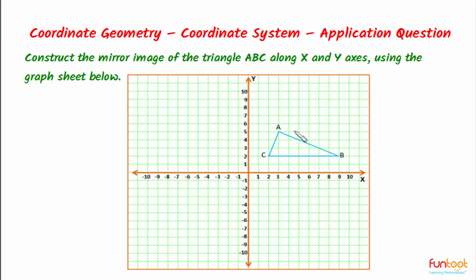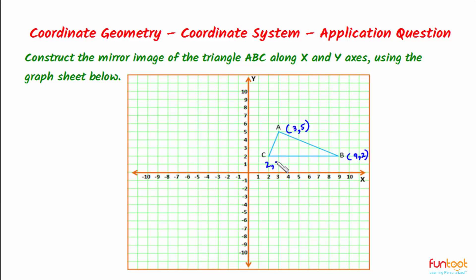First, we will find the coordinates of points A, B, and C. The coordinates of point A are (3, 5), point B is (9, 2), and point C is (2, 2).